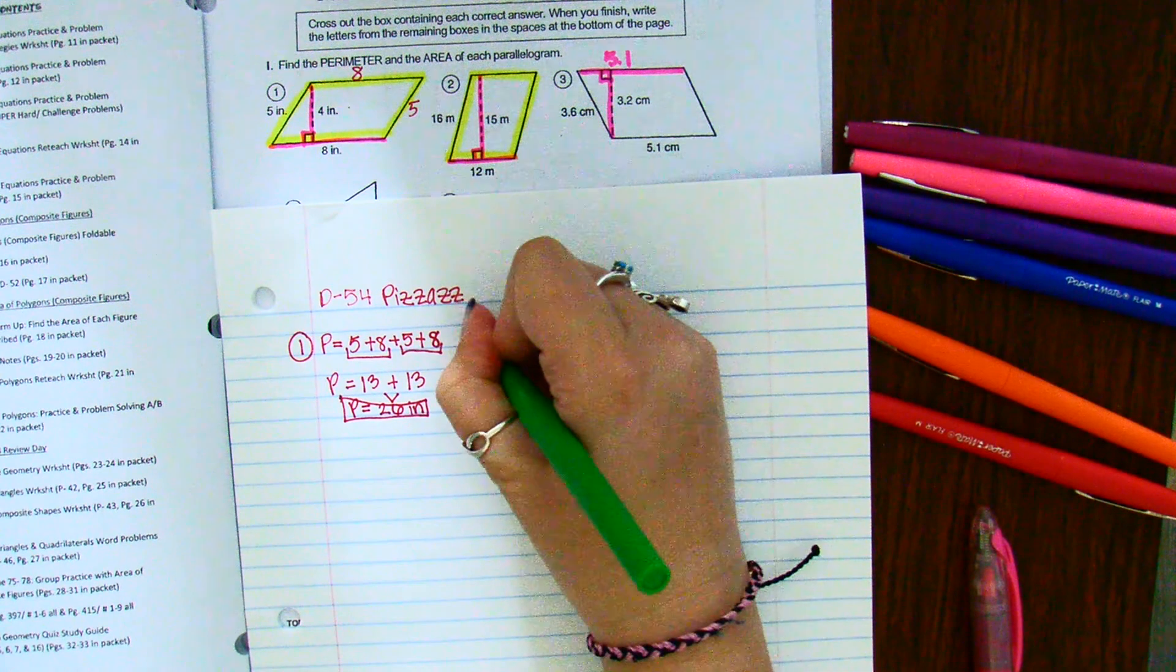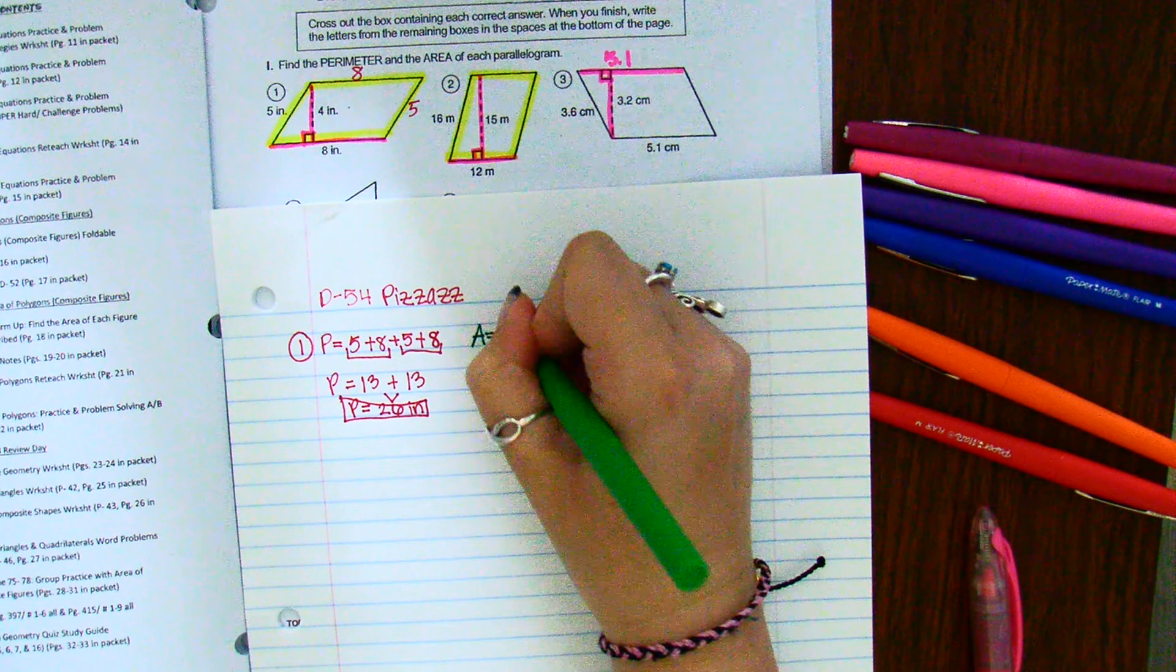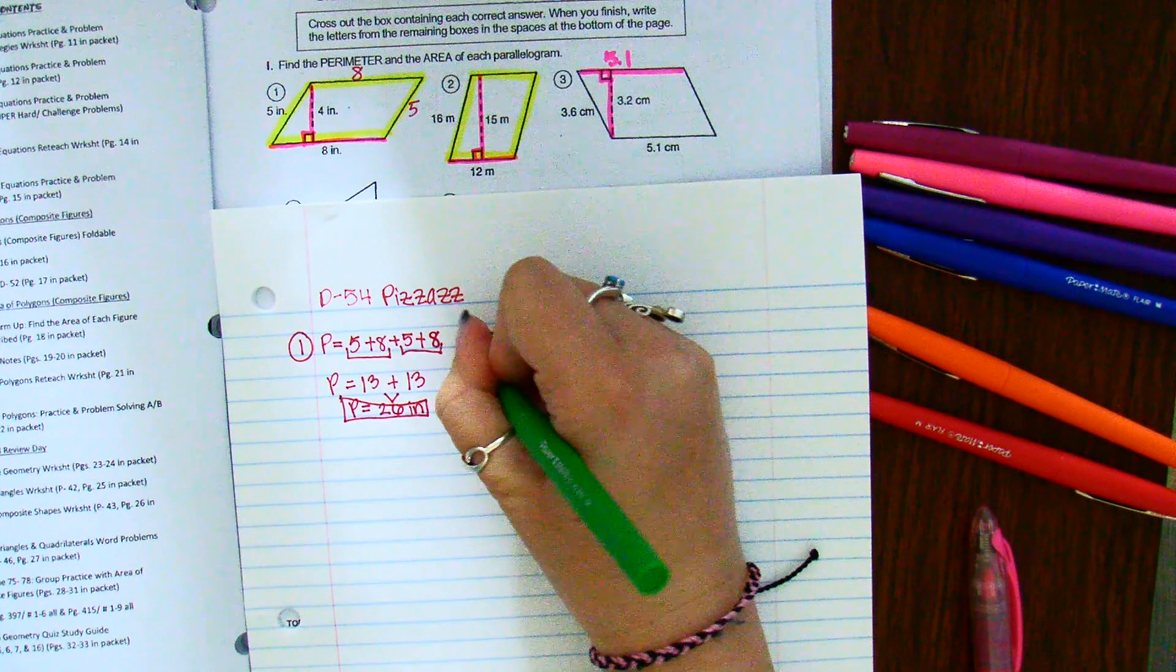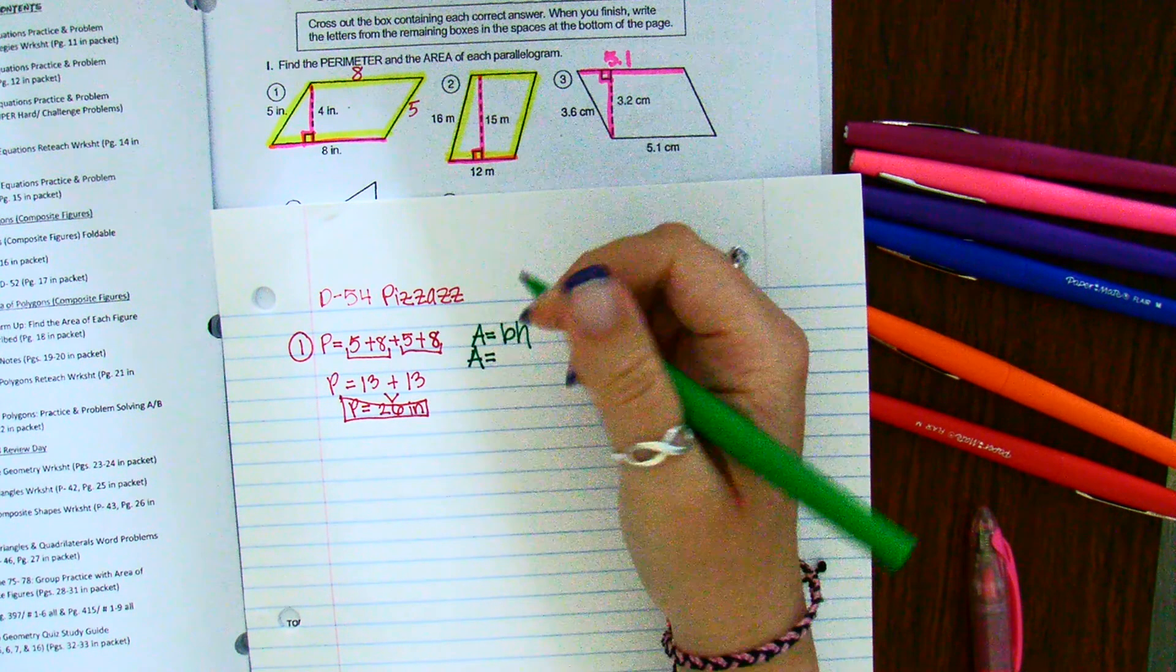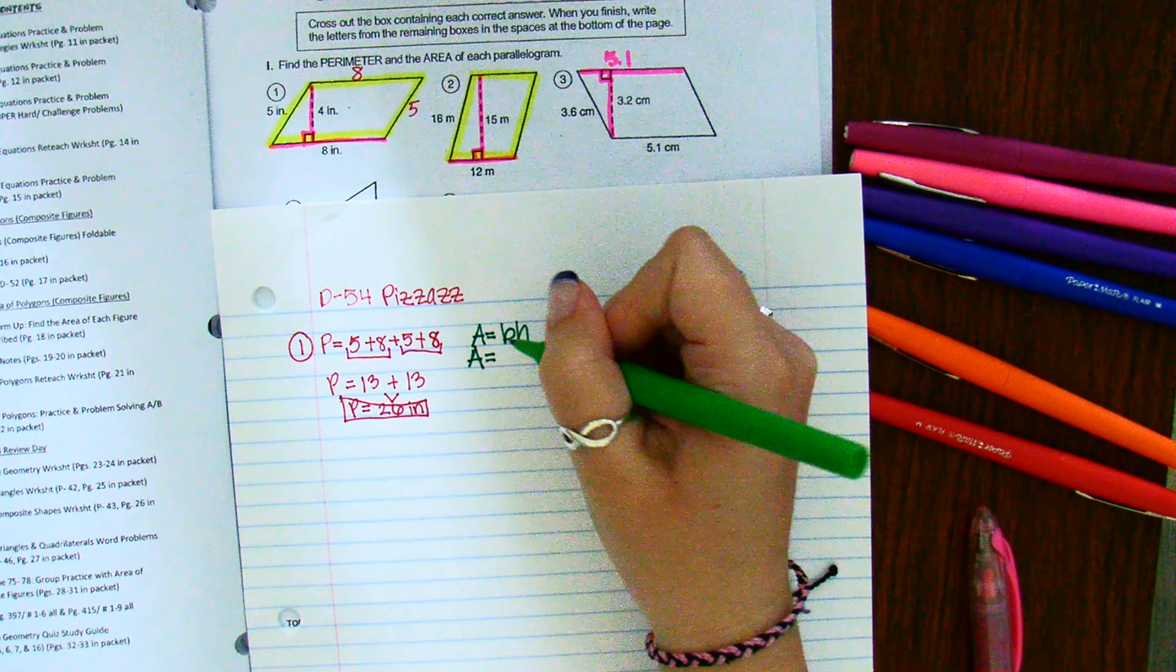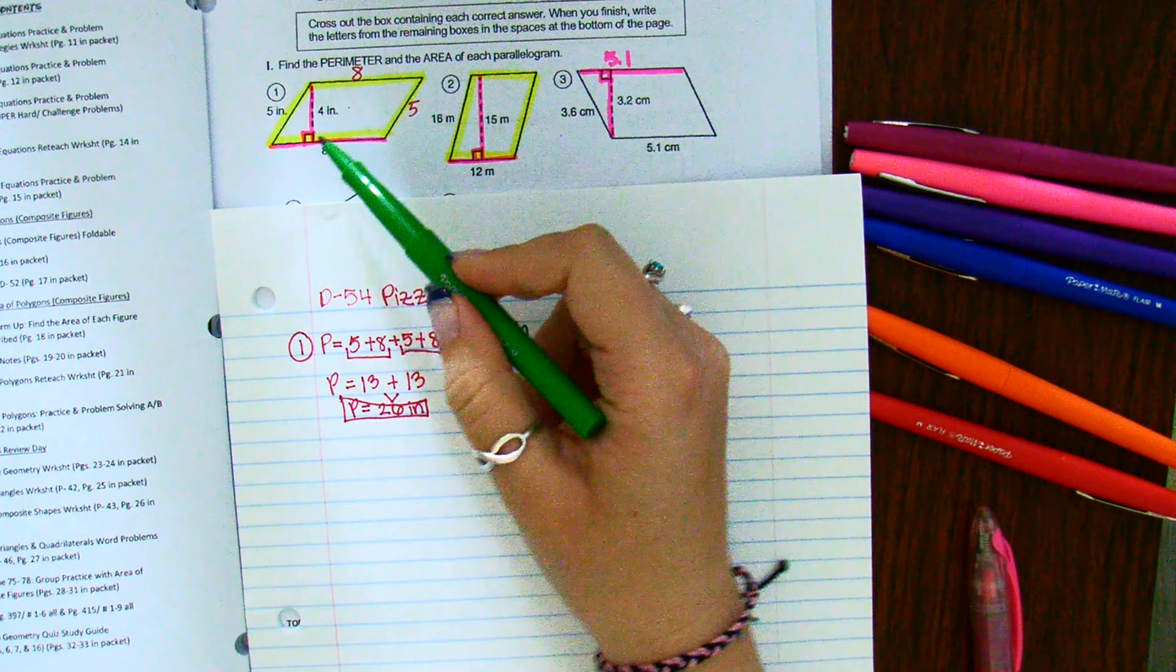Now let's focus on the area. The area is base times height. So again, I wrote out my formula right here to start with, and then the base in this instance, look for that little box.